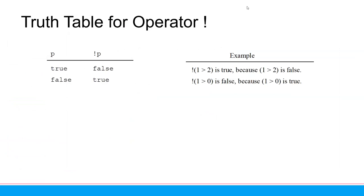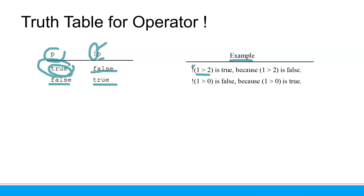If P is true and I put the exclamation mark before P, it becomes false. If P is false and I put the exclamation mark, it becomes true. For example, '1 is greater than 2' is false. But if I put the NOT sign before it, the negation of false is true. Conversely, '1 is greater than 0' is true, but if I put the exclamation mark before it, it becomes false.